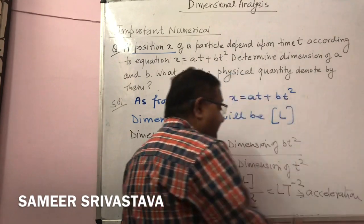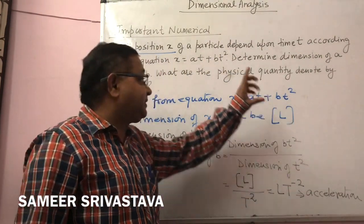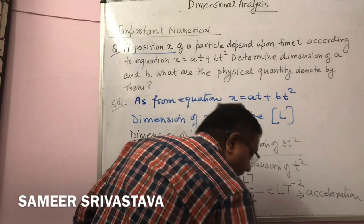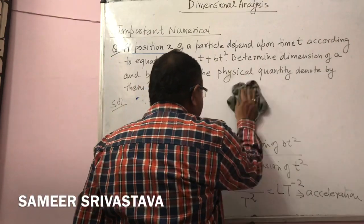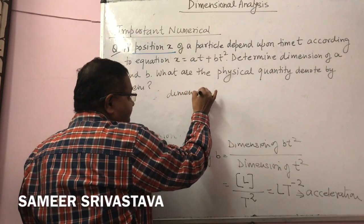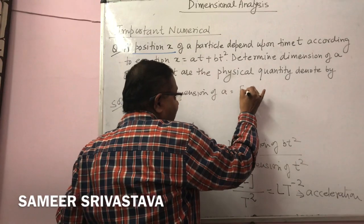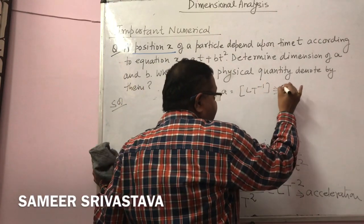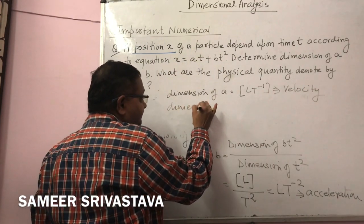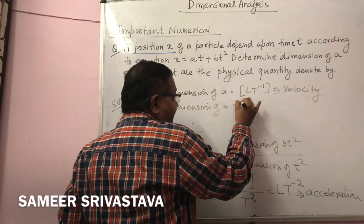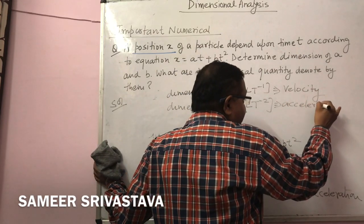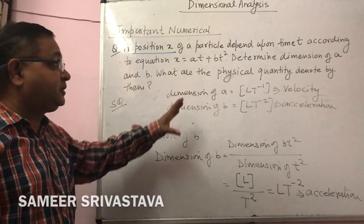The physical quantity represented by LT⁻² is acceleration. So the final result is: dimension of a = LT⁻¹, which represents velocity; and dimension of b = LT⁻², which represents acceleration. This is the final answer for this question.